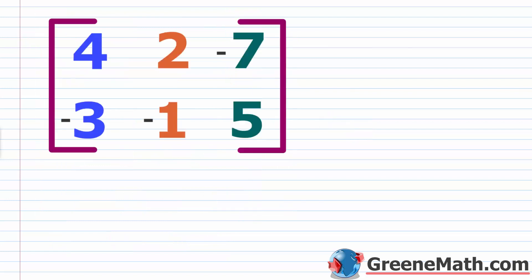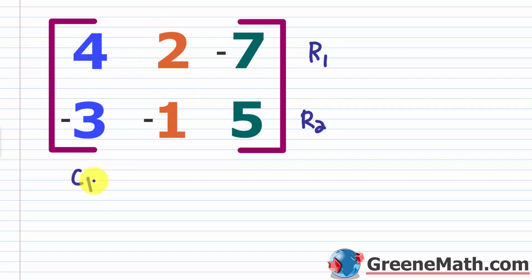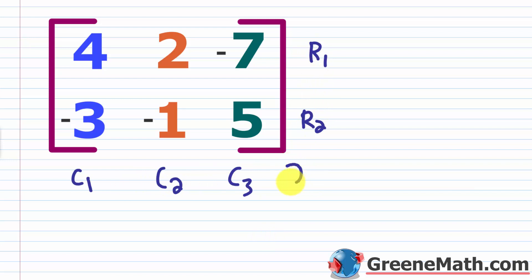What about this matrix? We have a row here — row 1 — and another row here. The rows go across. The columns are up and down: this is a column, this is a column, and this is a column. So this matrix has 2 rows and 3 columns, making it a 2 by 3.